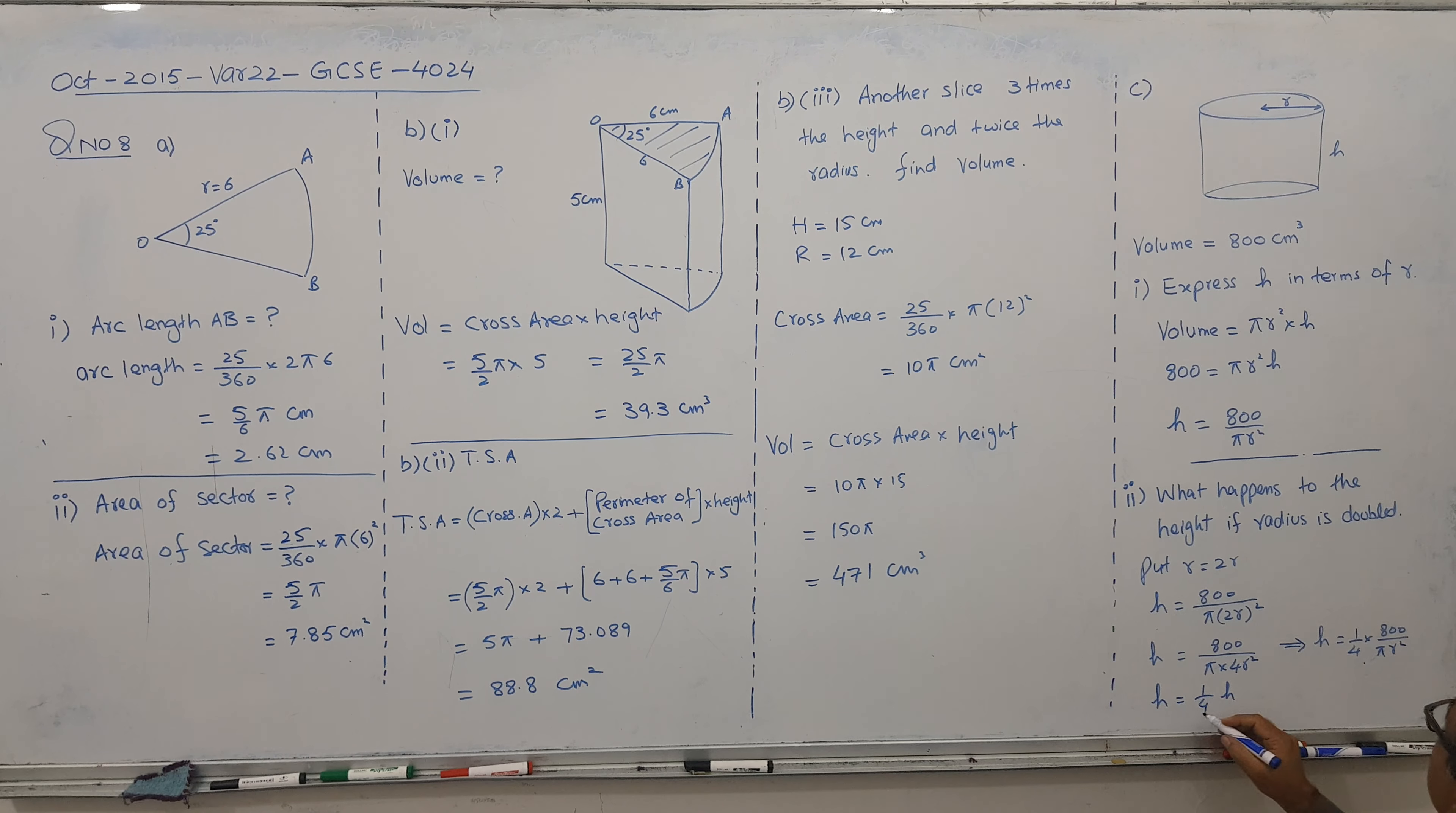So this is twice. The double is the height. So 1 fourth. So we can say that if you make it radius double, so then height become 1 fourth. Then height becomes 1 fourth.